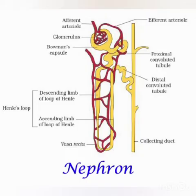These kidneys have a large number of small units — more than millions — which are called nephrons. You can see them in the image. The urine is produced in these nephrons only. The nephron consists of a cup-shaped structure called Bowman's capsule, and attached to it is a U-shaped tube called a tubule.